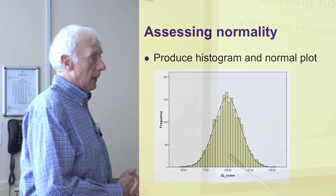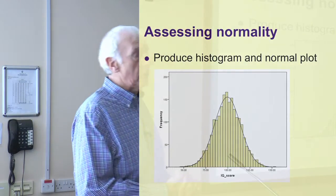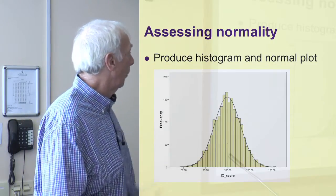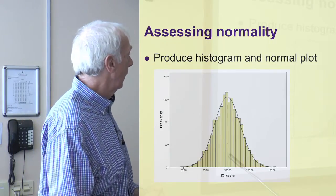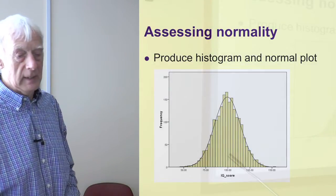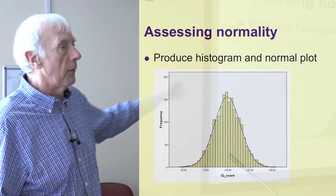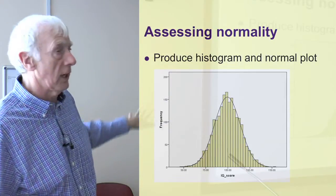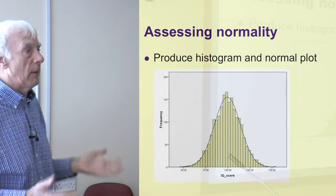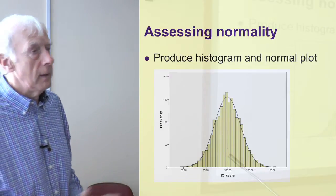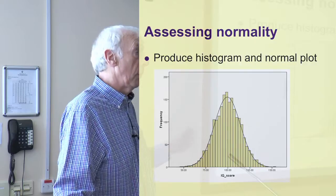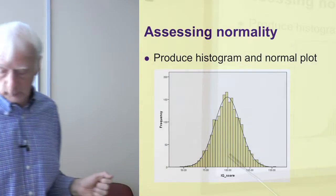So how do you assess normality? Well, the first thing to do is always produce a chart. Here's a simple bar chart — this one's of IQ scores, so it's going to be very close to normality. You look and see whether you've got this kind of chart with the bell shape to it. If you have, you can rest assured, go ahead, use Pearson's R. If you haven't, or if it's divergent from that, then it's probably safer to use the non-parametric equivalent.